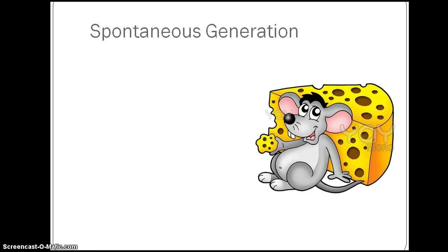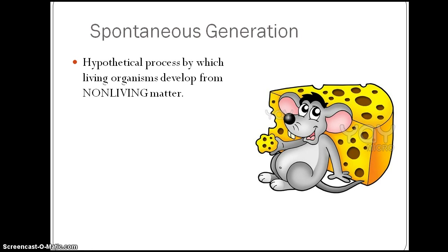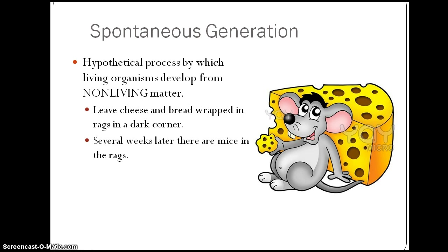Spontaneous generation basically says that non-living things develop into living things. For example, if you put cheese and bread wrapped in rags in a dark corner of a room and left it for a few weeks, when you came back there might be mice in those rags. People at one time thought it must have been the cheese and bread that produced those mice. This was also discussed with maggots and flies on meat, and experiments that ultimately proved the theory of spontaneous generation false.